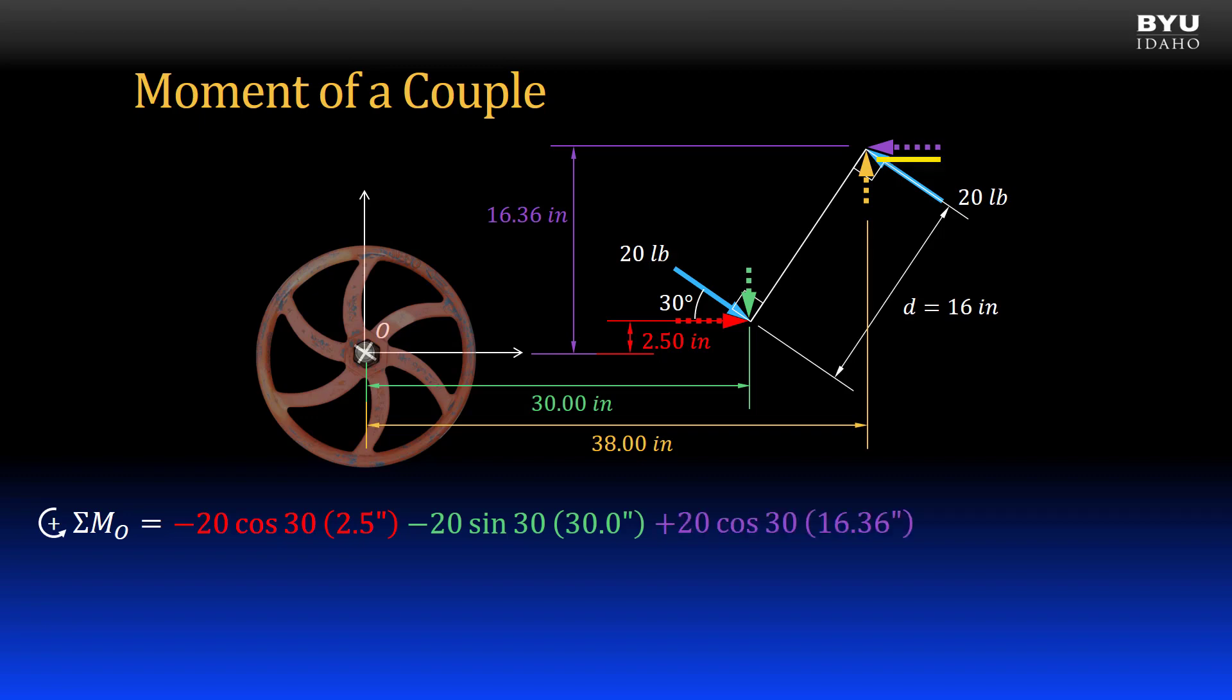Then after finding the location of the right force, I can include its horizontal component times its vertical offset, positive by our convention, and last the vertical component of the right force times its horizontal offset, also positive.